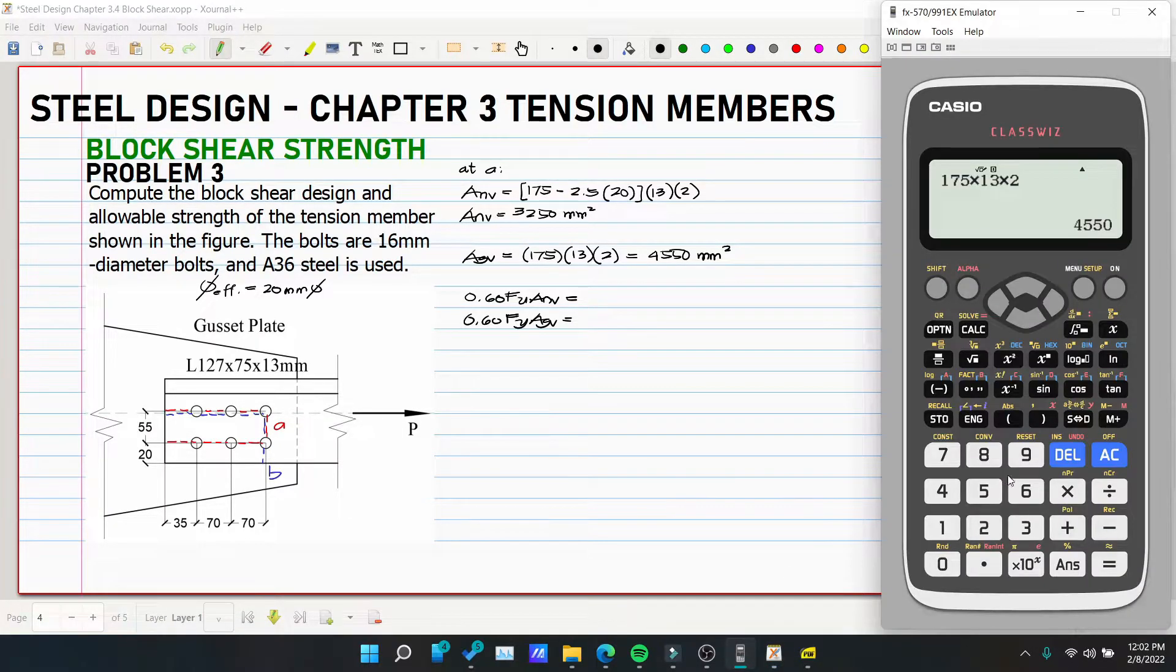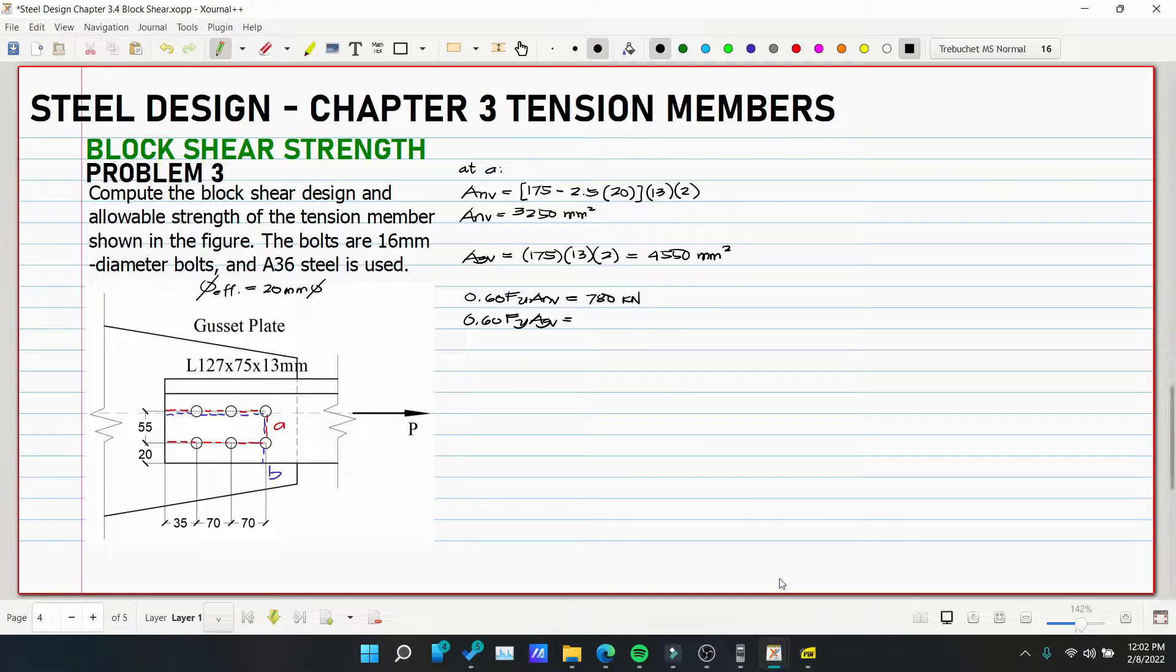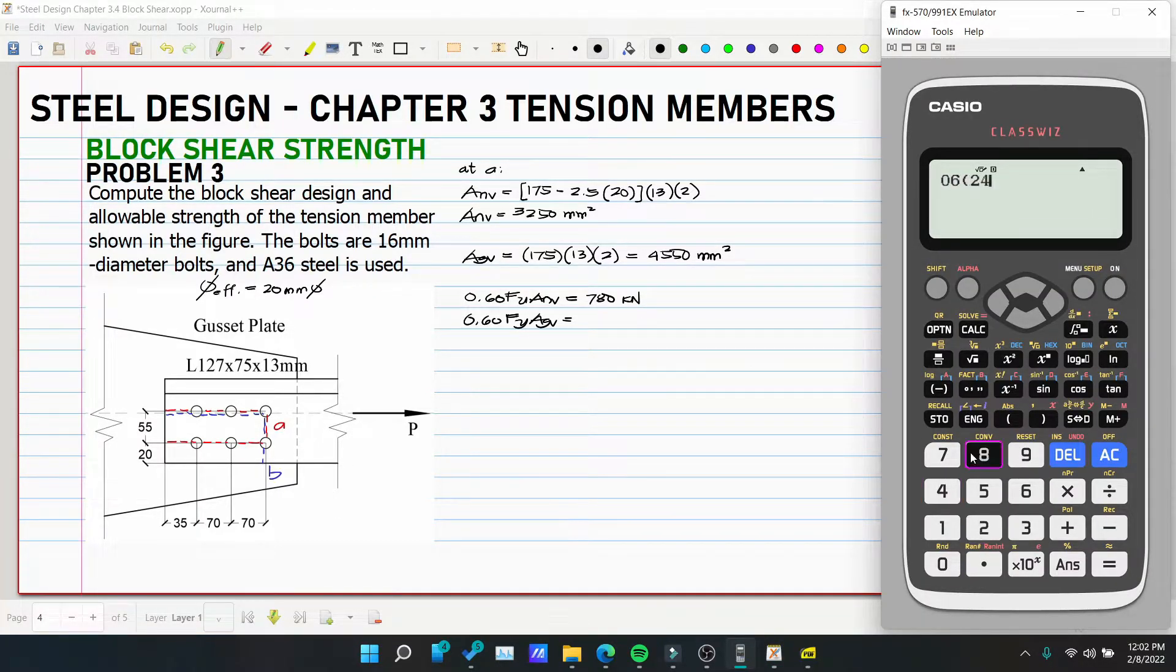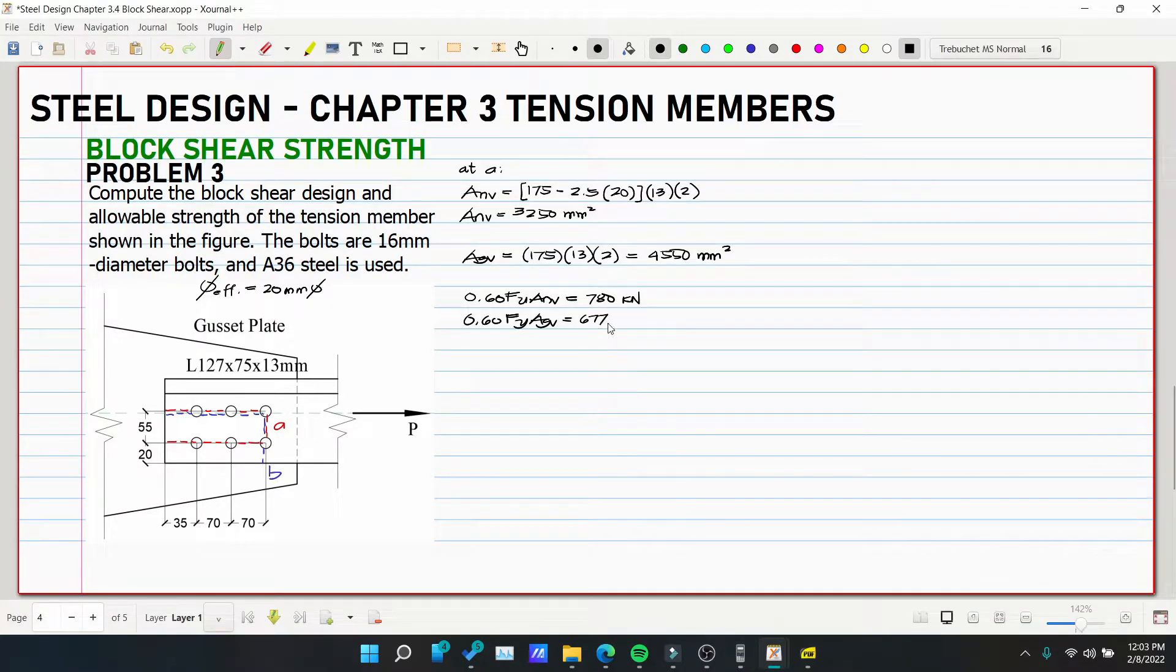This is FU ANV and 0.60 of FY AGV. Let's compute to double check our problem number 2. So 0.60 of FU, 400 multiplied by ANV, 3250, over 1000. So it's really 780 kilonewtons. Then 0.60 of FY 248 of AGV, AGV is 4550, divided by 1000. So this is 677.04 kilonewtons. So this again is what we'll use for shear.